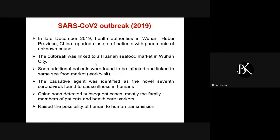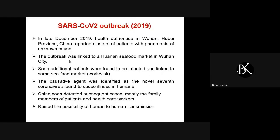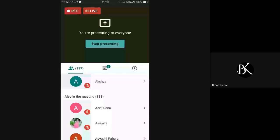Since the outbreak was linked to the Huanan seafood market, other individuals found positive all had some connection with that market — either visiting or working there. The causative agent was identified as a novel seventh coronavirus causing illness in humans. China soon detected subsequent cases — mostly family members of patients or healthcare workers who attended those patients — raising the possibility of human-to-human transmission.